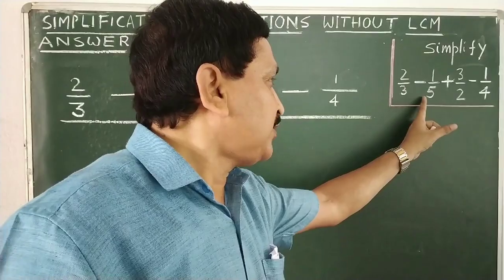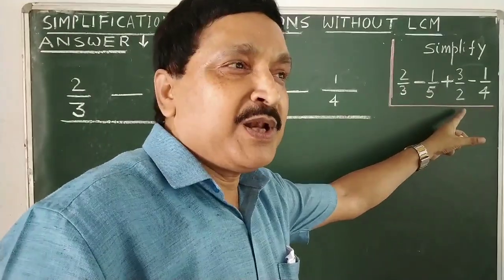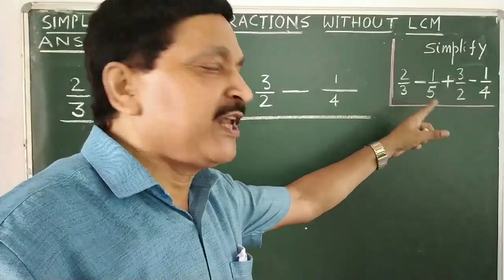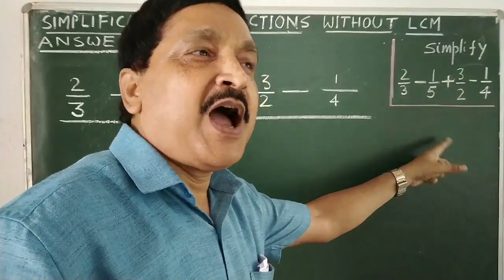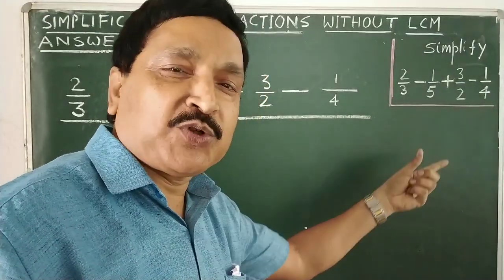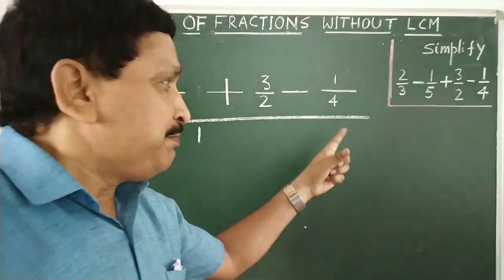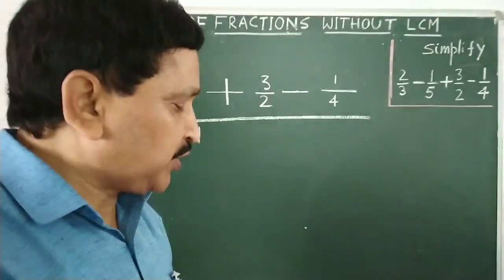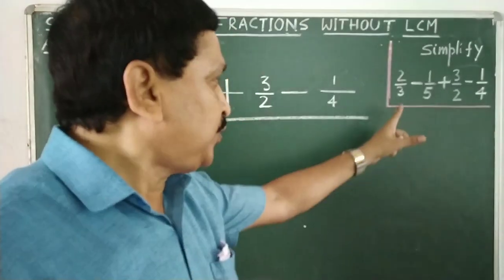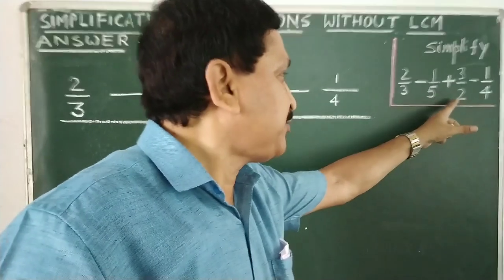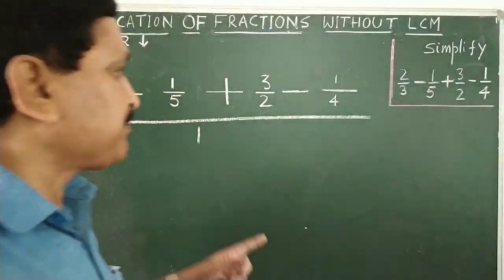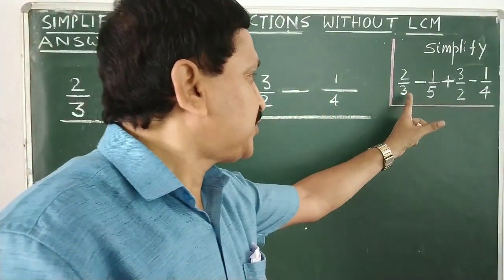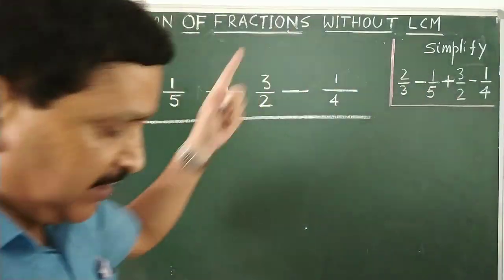Due to these four unnecessary members, we normally learn LCM first, then we learn how to find LCM, and after that we proceed. But without knowing the LCM you are going to do this. So just what you are going to do: three, five, two, four are the four items, so multiply everywhere with three, five, two, four.